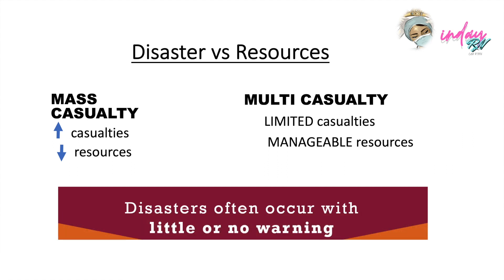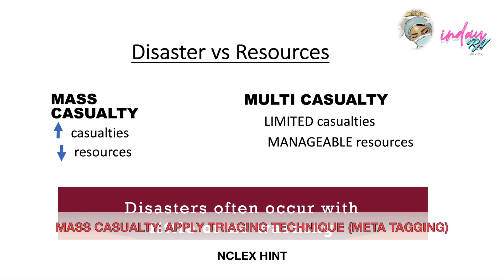For example, if you are alone and the number of victims is 50, that is a mass casualty. In multi-casualty, we have limited casualties and manageable resources — meaning you can still manage the situation. In mass casualty, by determining the casualty type, you know how to respond and what treatment to give your patients, and you know how to triage your patients.